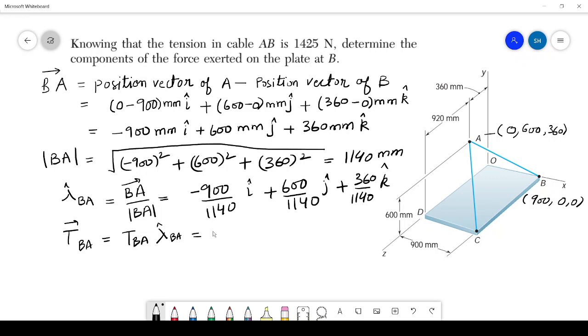So the magnitude is given as 1425, so this is here it is given. And in the bracket you can write this: minus 900 divided by 1140 i plus 600 divided by 1140 j plus 360 divided by 1140 k.